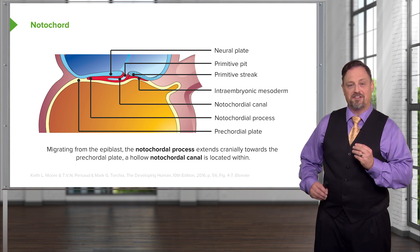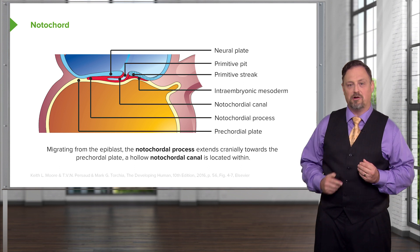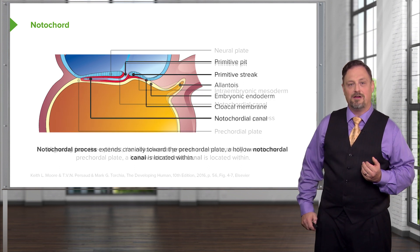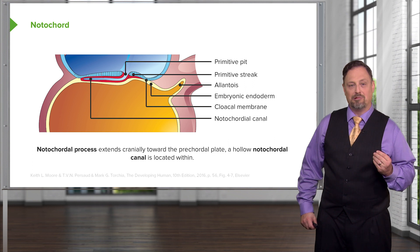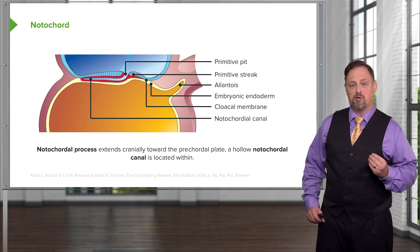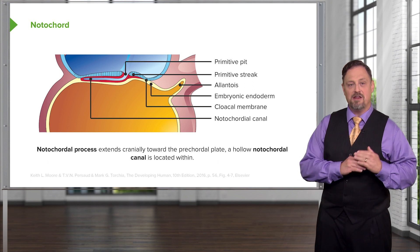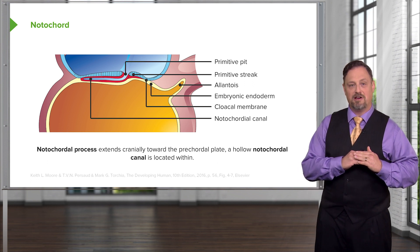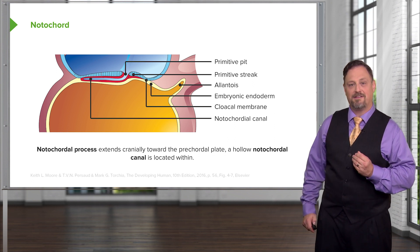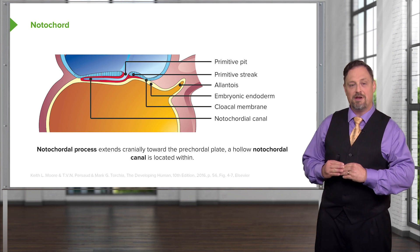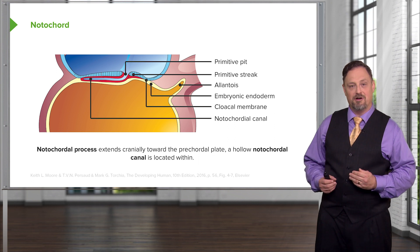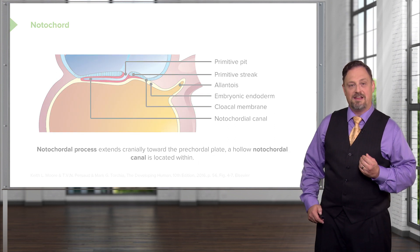As the notochordal process extends, a hollow tube forms in the center of it called the notochordal canal. As it extends closer and closer to the precordal plate, it never quite makes it there, because the precordal plate becomes the oropharyngeal membrane where ectoderm and endoderm are firmly adherent and will not allow mesoderm to pass between them. The same thing happens posteriorly at the cloacal membrane, marking the eventual openings of the urogenital and gastrointestinal systems.